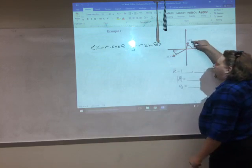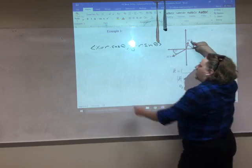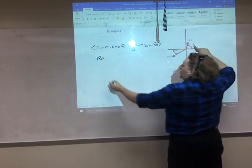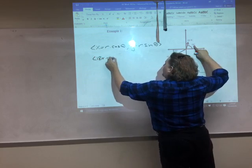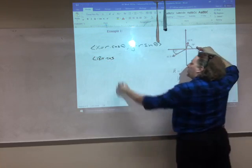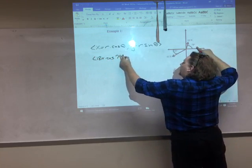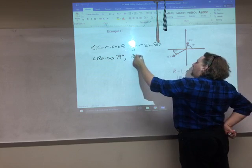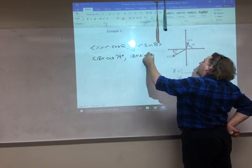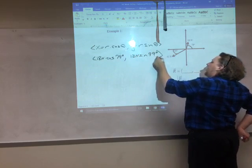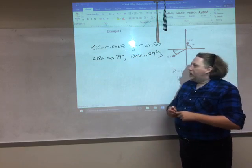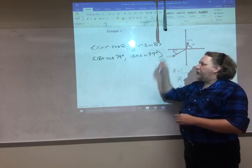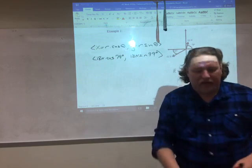So first I'm going to take on this vector right here. That is 18-Newtons is the size times the cosine of 79-degrees is the angle. And then to get the y component, 18-Newtons times the sine of 79-degrees. So matching up the parts, the radius is the magnitude, 18-Newtons. The angle is 79-degrees. And now I'm running to my calculator.